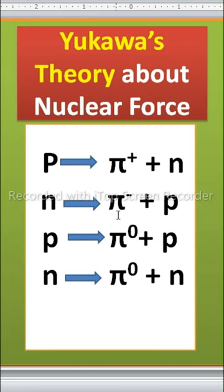Positive and negative pions produce the strong nuclear force between protons and neutrons. Neutral pions produce the strong nuclear force between like particles: proton and proton, or neutron and neutron. This way, the nuclear force acts between nucleons.